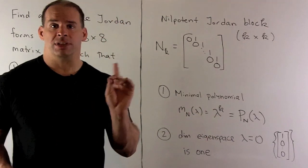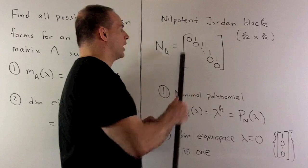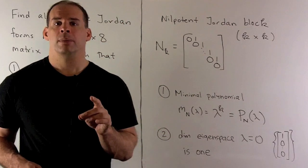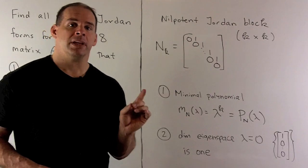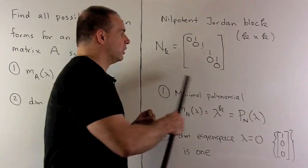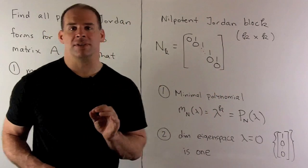You should check that. If we take our matrix, raise it to the kth power, we get zero, and we won't get it for any smaller exponent. Now, in some sense, these nilpotent Jordan blocks are going to be the opposite of diagonal matrices.